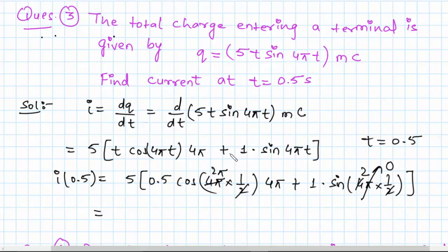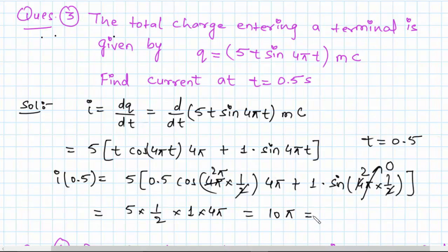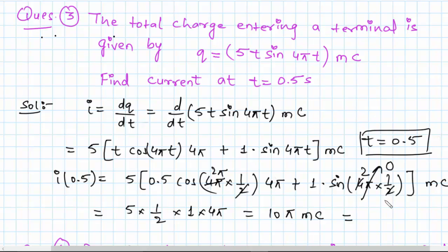Sine of 2 pi is 0 and cos of 2 pi is 1. So this will be 5 times one-half, cos of 2 pi is 1, then we have 4 pi, so this will be 10 pi. And the units are micro coulombs, so 10 pi micro coulombs, which is approximately equal to 31.42 micro coulombs. This is the final answer.